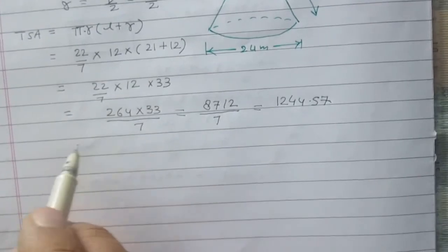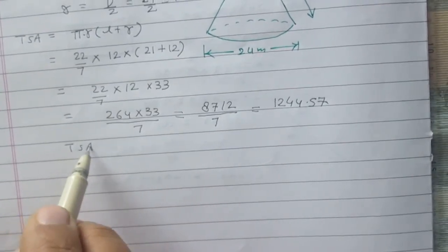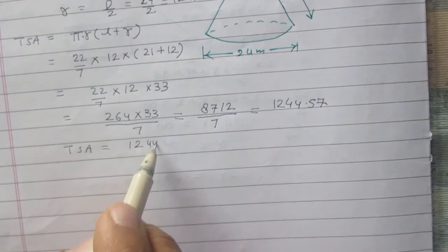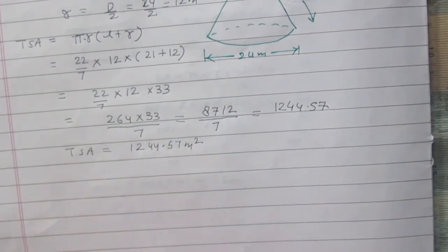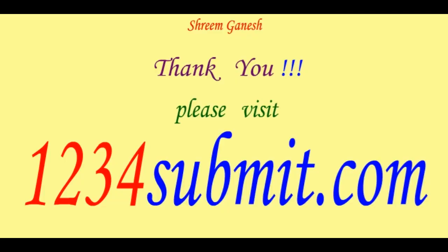So we can say that total surface area of this cone is 1244.57 meter square.